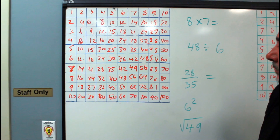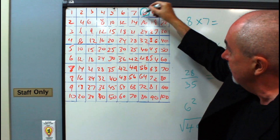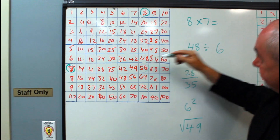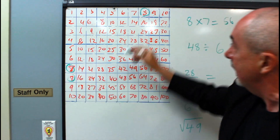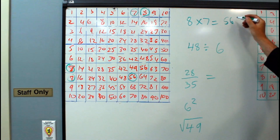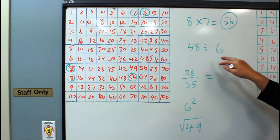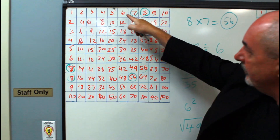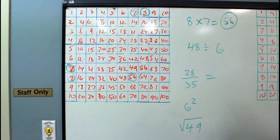Here's how to use the grid: for 8 times 7, find 8 on the outside top row, find 7 on the first column, join them up, and you get 56. The beauty is you could find 8 and 7 from either direction and still get 56 — it doesn't matter. For division, 48 divided by 6: find the 6 times table, go down until you find 48, then turn and move out to find 8.